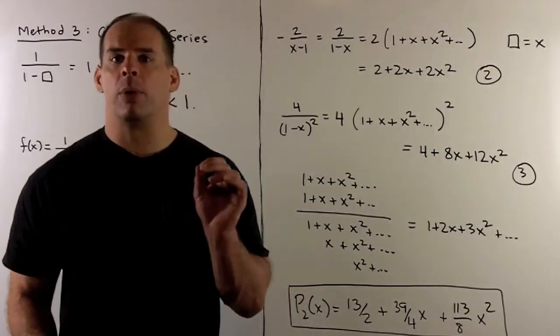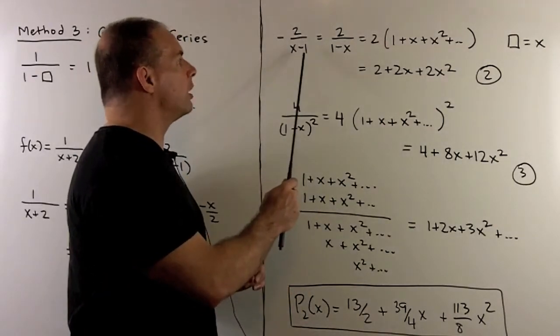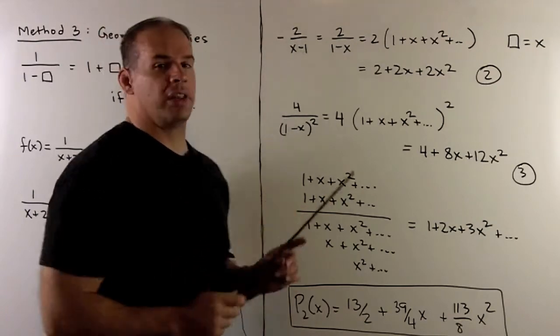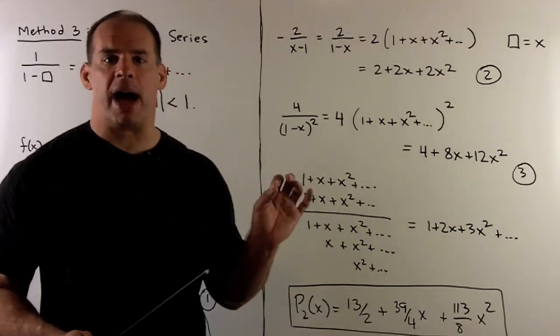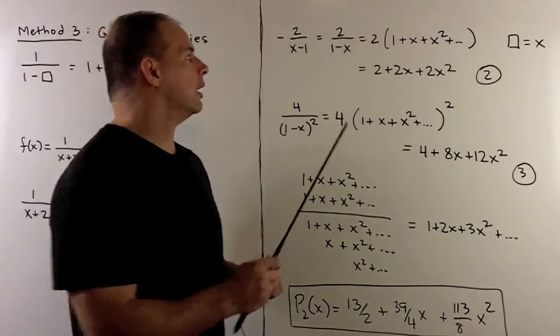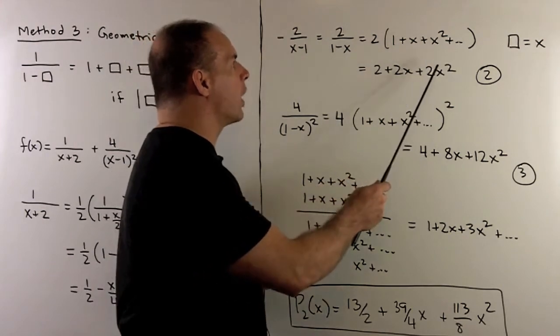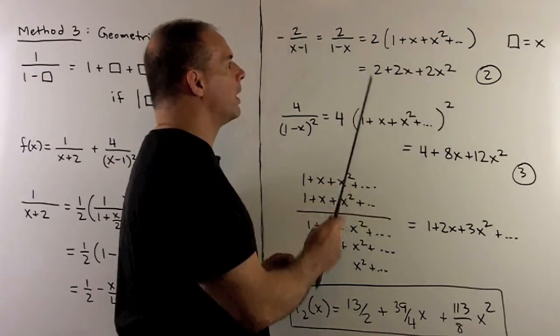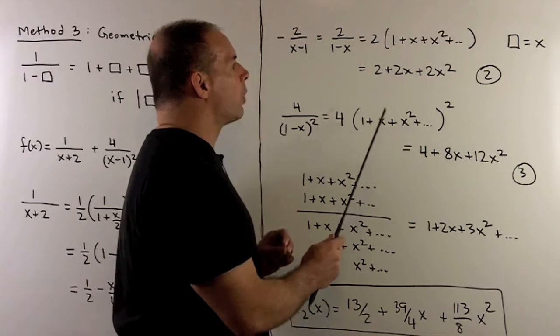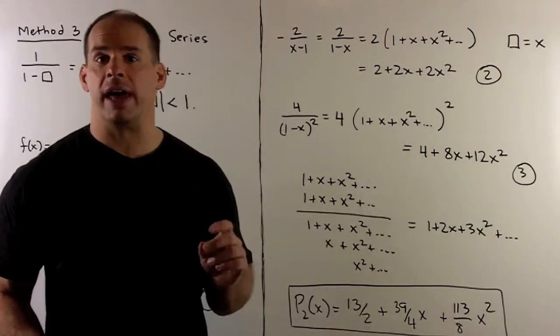We go to the third term in our partial fraction expansion. I'll have -2/(x-1). I'm going to reverse the order in the denominator, so I'll get rid of the minus sign, leaving me with 2/(1-x). Now here I can just let box be equal to x. So we'll have 1 + x + x² and so on, and we multiply by 2. So the part we're interested in is going to be 2 + 2x + 2x². We'll call that item 2.